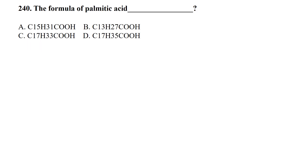The formula of palmitic acid — palmitic acid has 16 carbons. Looking at the options, the formula C₁₅H₃₁COOH is the formula of palmitic acid.